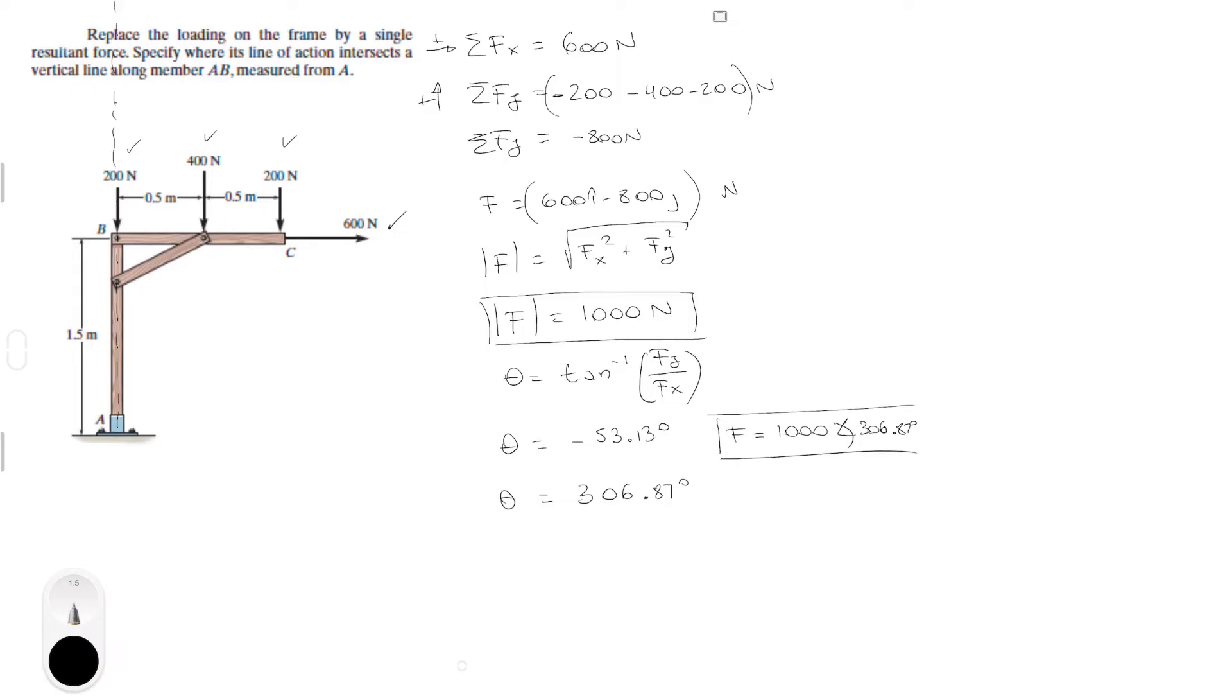Now that we find the force, we know that the sum of the moments on point A, which is this point right here assuming counterclockwise is positive, is equal to each of the forces times the lever arm. Now this force doesn't really generate any moment. The 600 force times this lever arm right here, it's generating a negative moment.